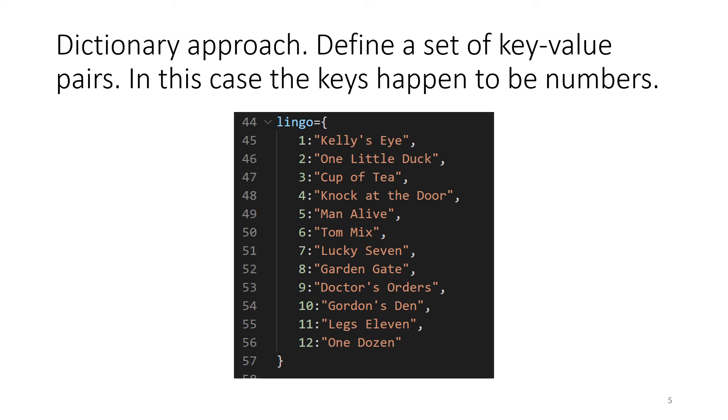The dictionary is not limited to the keys being numbers. It just happens to be the situation in this case. So we're going to use the key, which is a number, to look up the corresponding phrase. So if I had an 8 and I'm just going to use the 8 as a key and look that up, then I would come up with 'Garden Gate'.